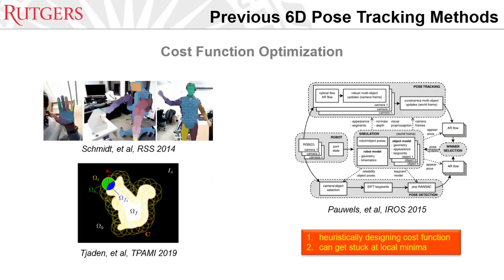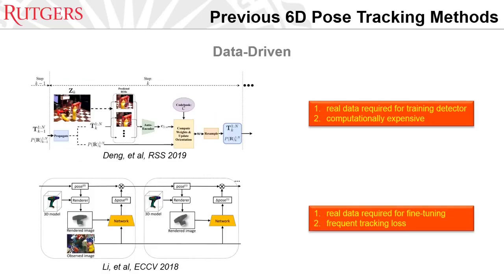The second type of approach is cost-function optimization. However, it also requires heuristically designed cost functions, and the convex optimization formulation can easily suffer from the local minimum problem. Last, there are data-driven approaches. However, like many other deep learning-based approaches, real data are usually required either for training the detector or for fine-tuning. Also, the first approach is computationally expensive, preventing real-time usage. For the DeepIM work, it suffers from frequent tracking loss.